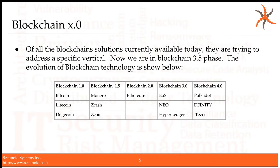In this slide I talk about the evolution of blockchain technology since its inception. Blockchain 1.0 — I call these Bitcoin, Litecoin, Dogecoin — these were the first incarnations of blockchain, and the main use case was cryptocurrencies.